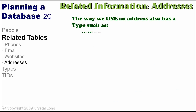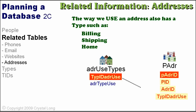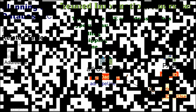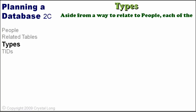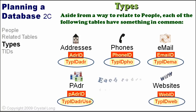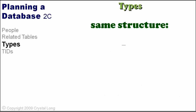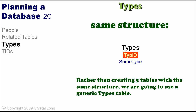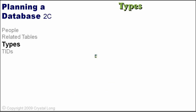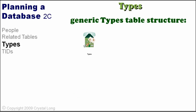The way we use an address also has a type, such as billing, shipping, or home, so we will add a types field to our PADR table. For each of our related tables there is a type, and the types tables have the same structure: an auto-number primary key and a descriptive text field. Rather than creating five tables with the same structure, we are going to use a generic types table.